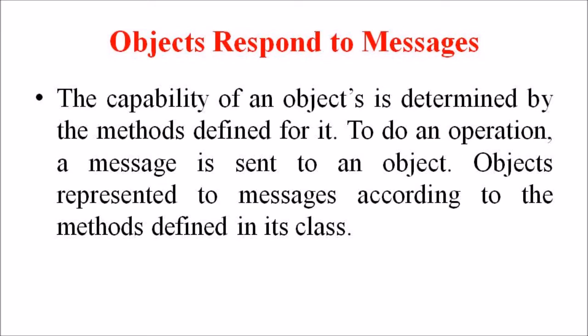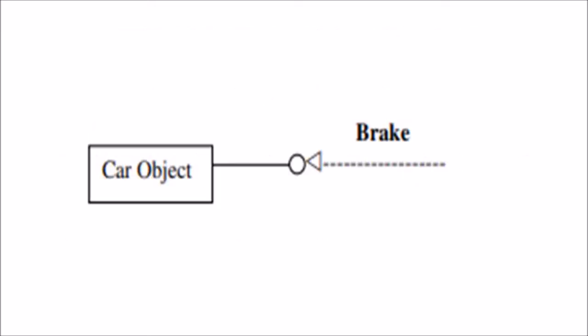For example, when we press on the brake pedal of a car, we send a stop message to the car object. The car object knows how to respond to the stop message since brakes have been designed with specified parts such as brake pads and drums, which precisely respond to that particular message.